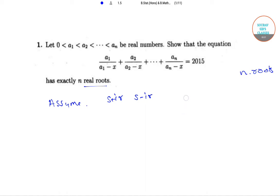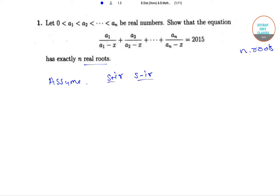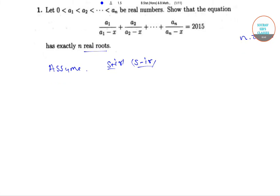Since these values of x will satisfy the equation, we will have the equation as a1 divided by a1 minus s minus ir plus a2 divided by a2 minus s minus ir, and so on till an divided by an minus s minus ir which equals 2015.